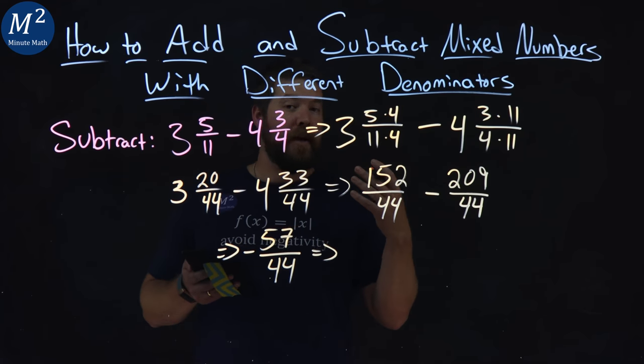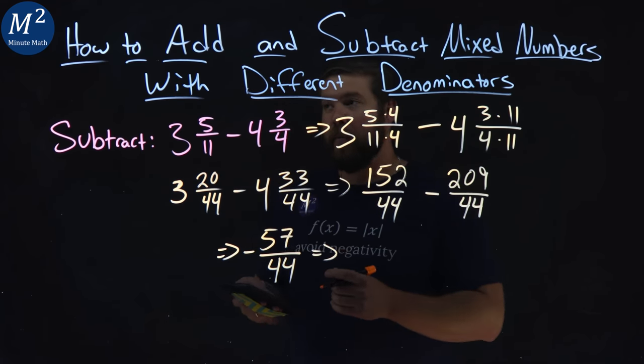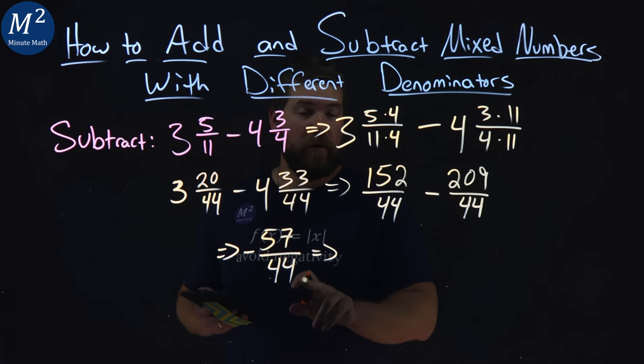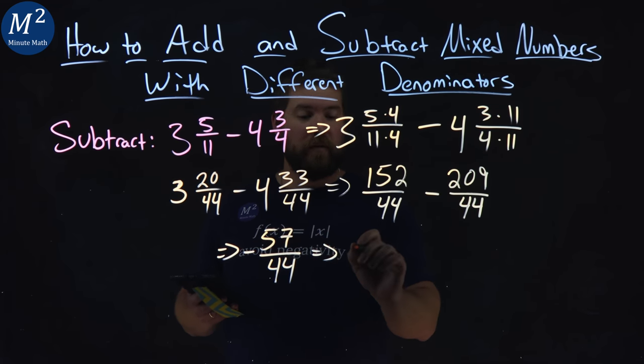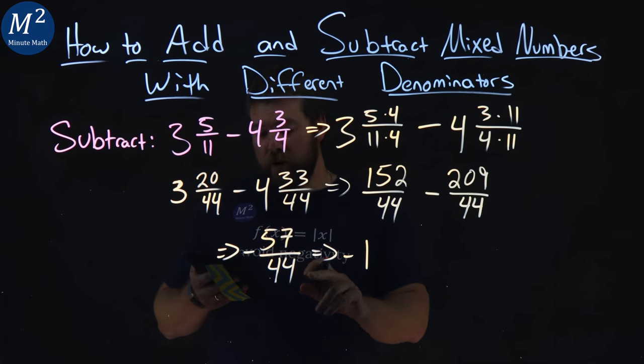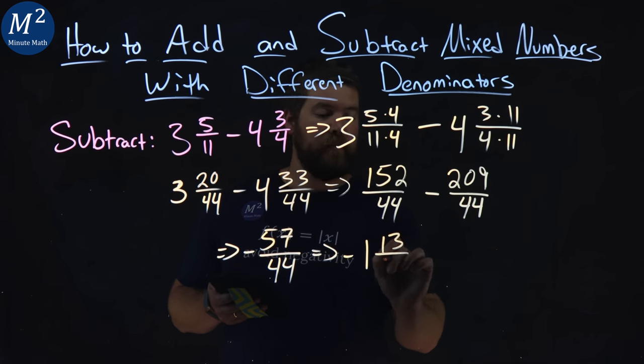What does that simplify to be? We want to do it as a mixed number here. So, 57 is clearly larger than 44. So, we take 1 out, we have a negative 1 on the outside, and 57 minus 44 is 13, over 44.